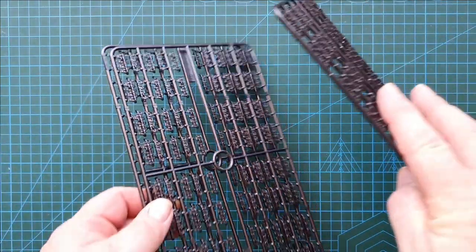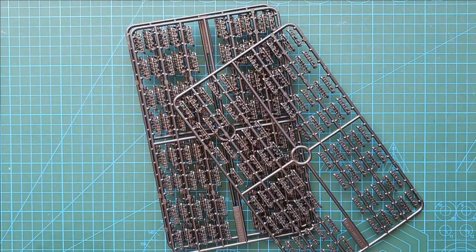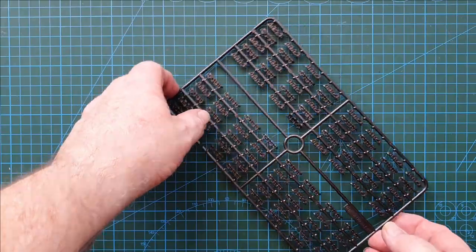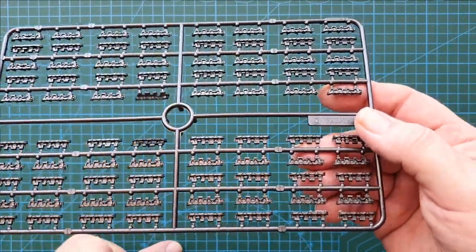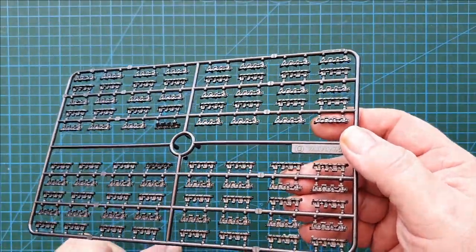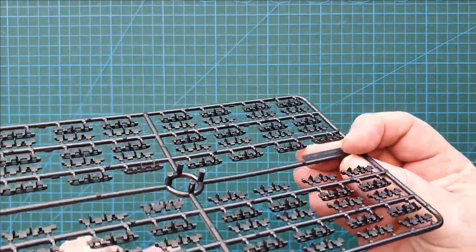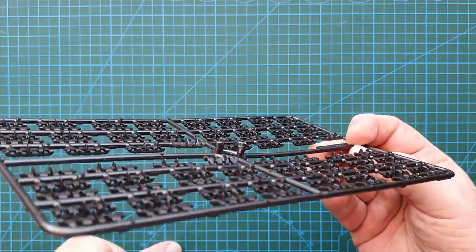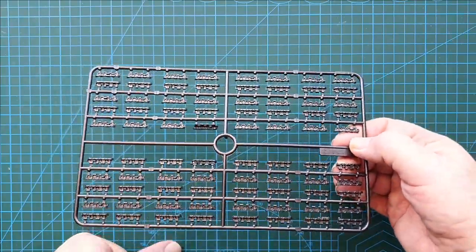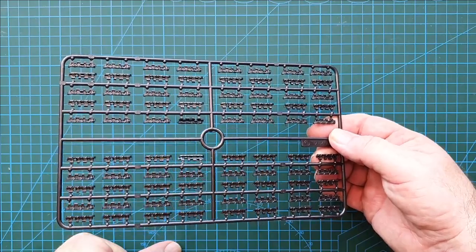The only thing left to show you is three sprues of individual track links. These do not click together, they glue together. The detail on them though is quite nice, even to the track guides. But you'll just have to be careful lining them up to make sure they're nice and straight before you put them on the tank. And that, guys, is all there is to it.